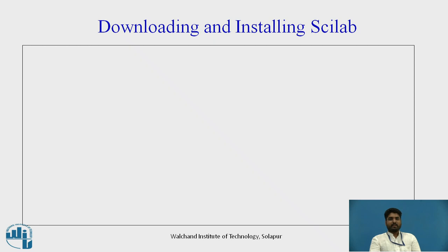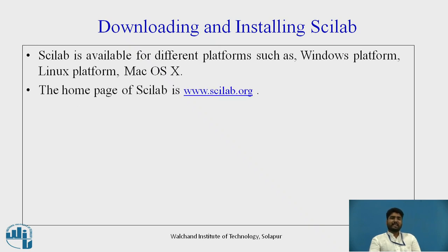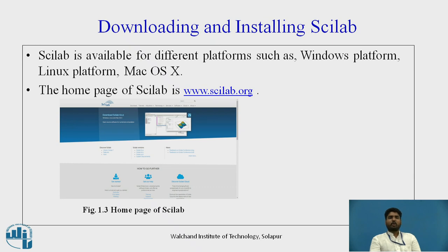Downloading and installing Scilab is very easy. Scilab is available for different platforms such as Windows, Linux, and Mac. This is the homepage of Scilab. Once you open the homepage, click on download. There are various options available for Windows, Linux, and Mac platforms. Your file gets downloaded; just click on the downloaded file and run it. The setup file will be installed on your PC or laptop and Scilab is ready to use.